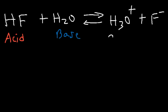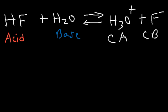The hydronium ion is the conjugate acid — whenever you add a hydrogen to a molecule you create a conjugate acid. Fluoride is the conjugate base — whenever you take away a hydrogen you create the conjugate base.